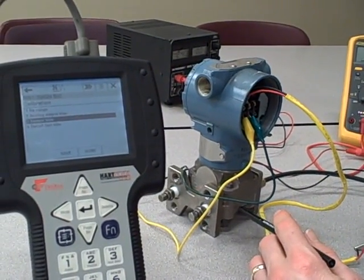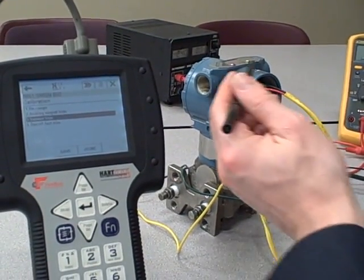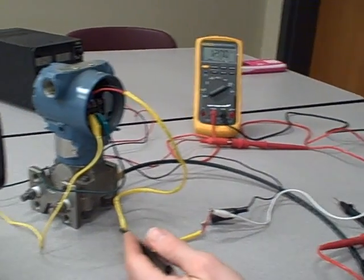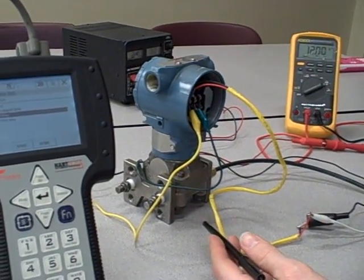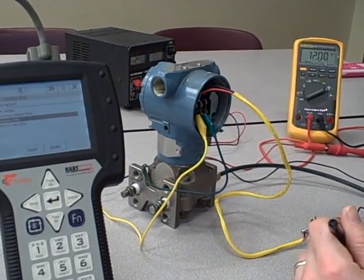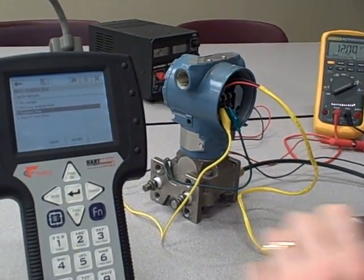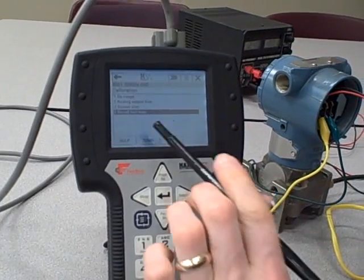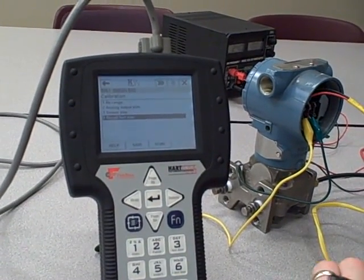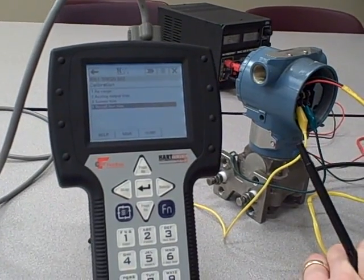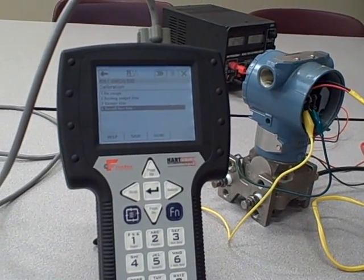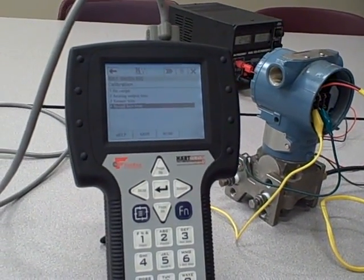In order to do a sensor trim, I would need, in addition to the transmitter and a source of pressure like this pump, some other independent pressure measuring instrument that I could use as a standard. I do not have that on this test bench, so I will not use that. I could also go into Recall Factory Trim, in case you think you've horribly messed up the trim setting values on the transmitter. You can recall the factory trim values that were set at the time of manufacture.